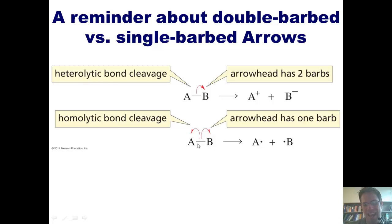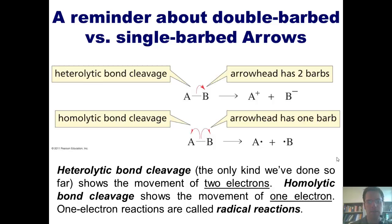By comparison, if I have my bond between A and B splitting in this manner, where I have a single-barbed arrow going to both A and B separate, then what that means is that both A and B are each taking one of those two electrons in their bond and walking away with it, giving me A that has a single unpaired electron and B that has a single unpaired electron. These types of substances, molecules or atoms that have a single unpaired electron, are called radicals. And this type of movement of electrons, in which one electron goes up onto one individual atom, is called homolytic bond cleavage. Thus, we see that heterolytic bond cleavage shows the movement of two electrons, and homolytic bond cleavage shows the movement of one electron. Once again, one electron reactions are called radical reactions.